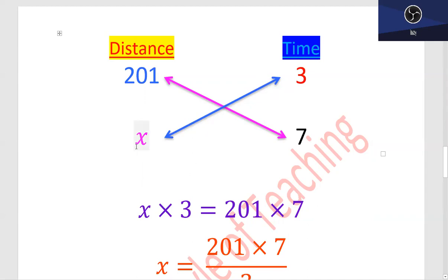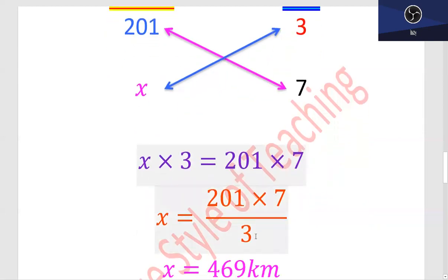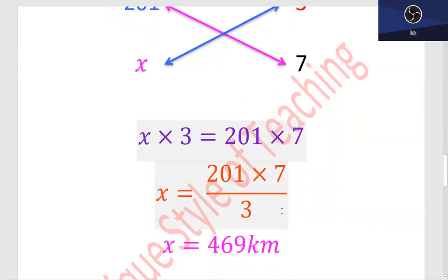x times 3 equals 201 times 7. x equals 201 times 7 divided by 3.